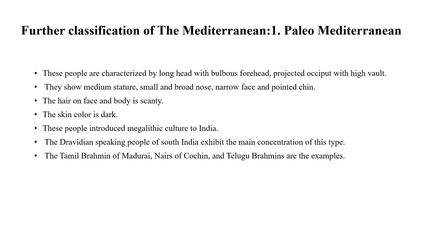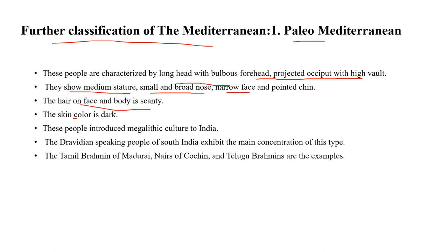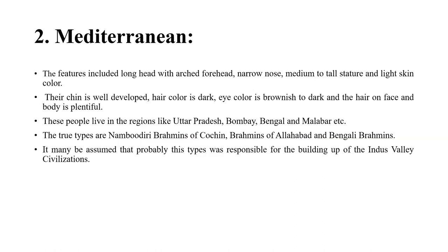The Mediterranean classification has three subtypes. First is Paleo-Mediterranean, characterized by long head, projecting occiput, high vault, medium stature, small broad nose, narrow face, and pointed chin. Hair on the face is scanty and skin color is dark. These people introduced megalithic culture to India. Dravidian-speaking people of South India show this type — Tamil Brahmans of Madurai, Nairs of Cochin, and Telugu Brahmans are the best examples.